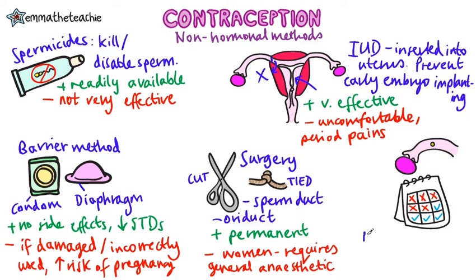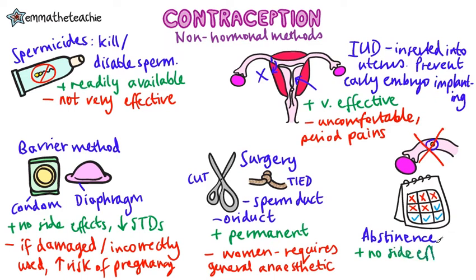The final method is abstinence. This is making sure that you don't have sexual intercourse when the egg is in the oviduct. The advantage is that it has no side effects whatsoever, but the disadvantage is a big one — it's really risky, and you have a high risk of getting pregnant with this method.